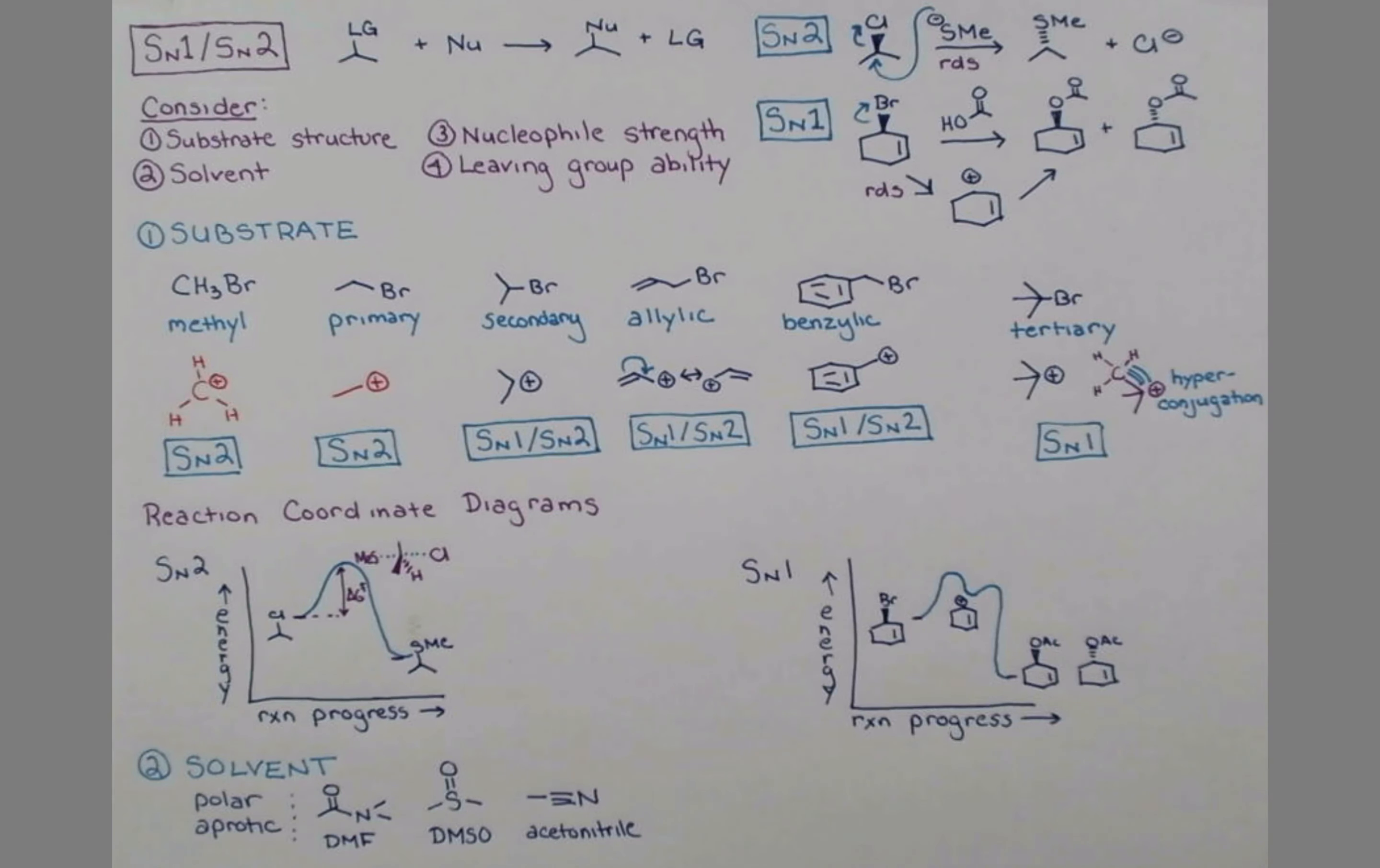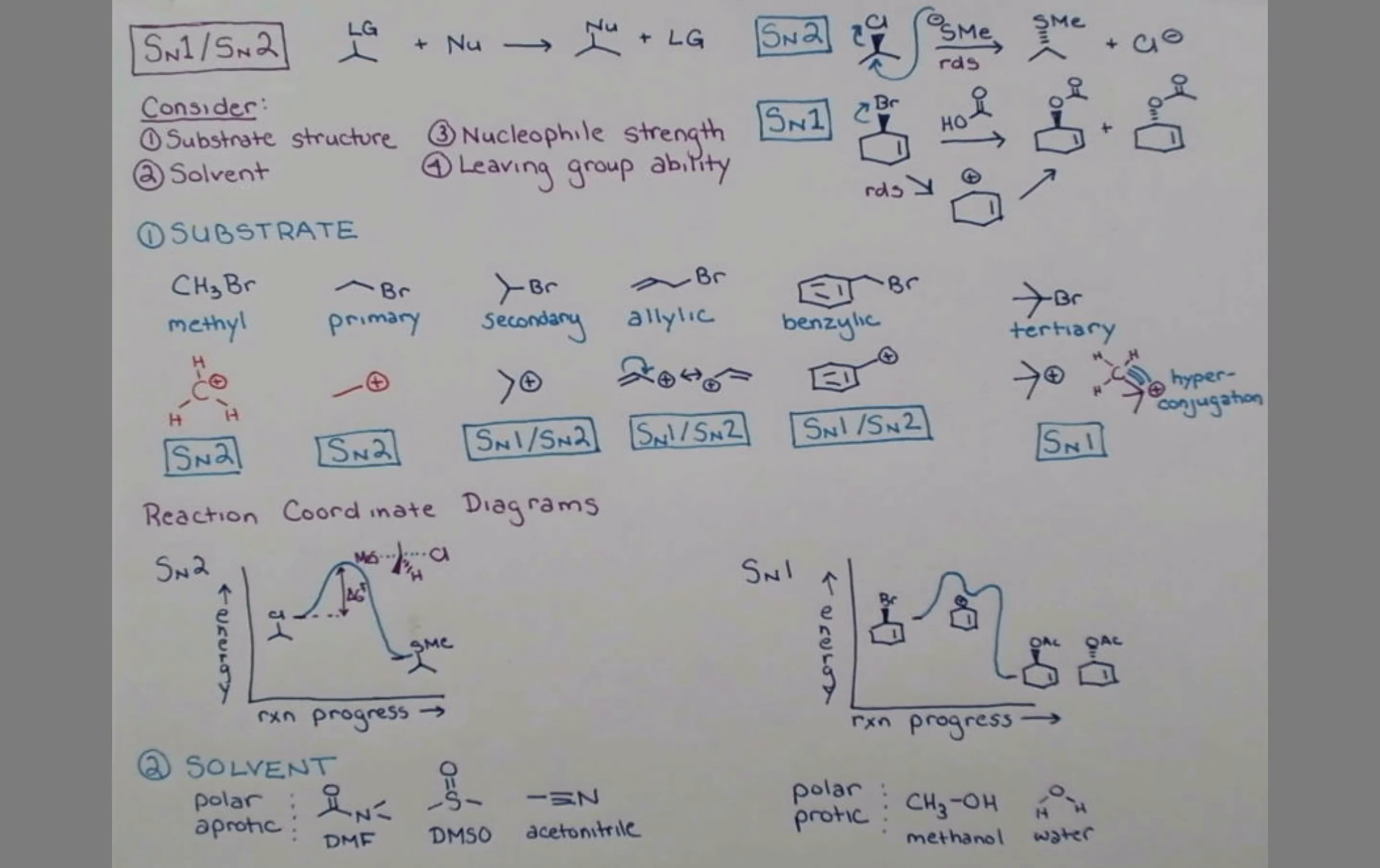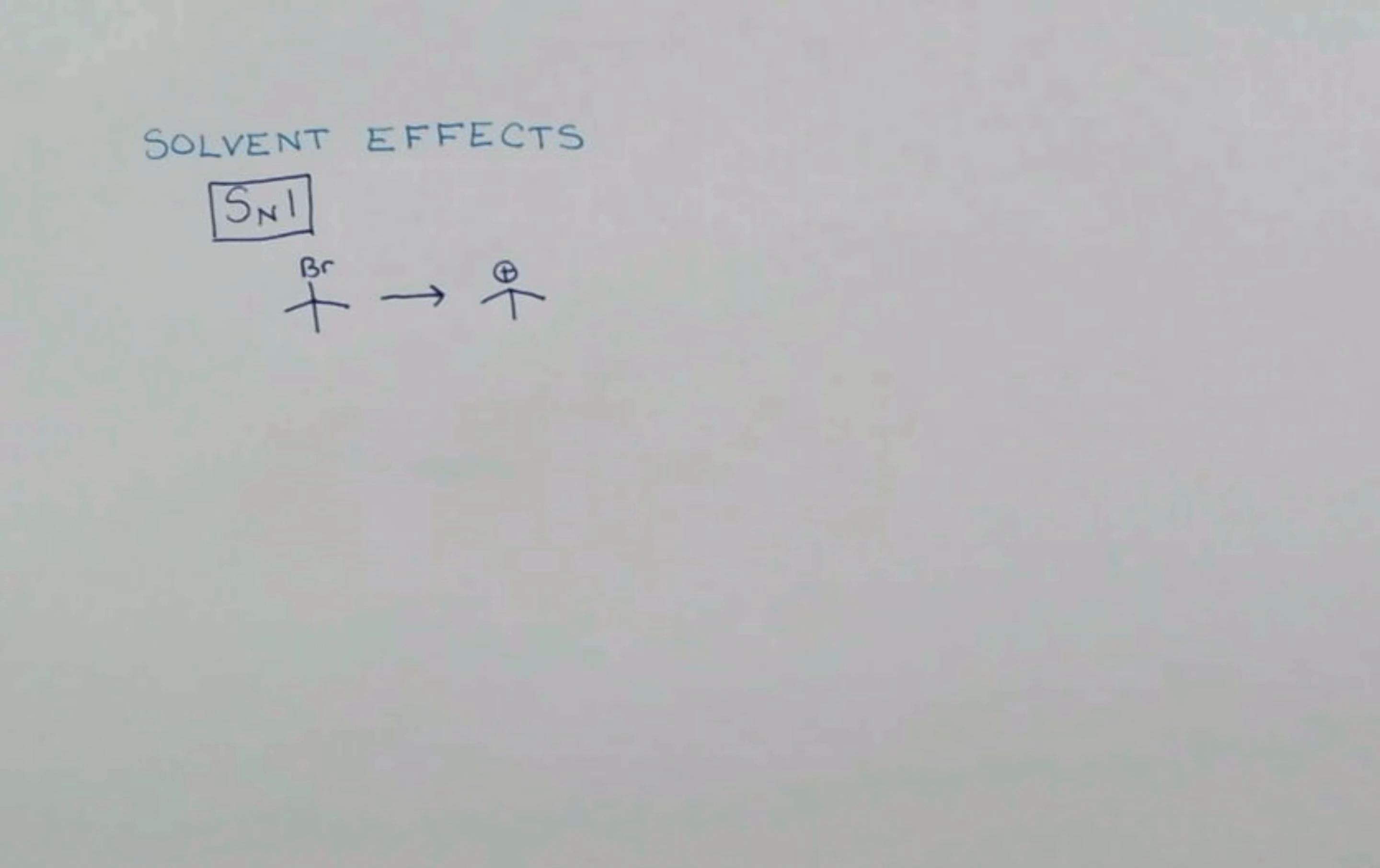Now the SN1 reaction is often run in polar protic solvents. Some examples of this are methanol, and we have the proton here. Water is a great polar protic solvent. Another example is acetic acid that we used in this reaction. Let's look just a little bit deeper at the solvent effects and how polar protic solvents are going to speed up the rate of SN1 reactions.